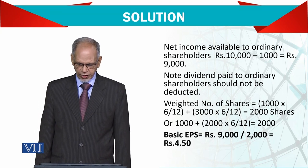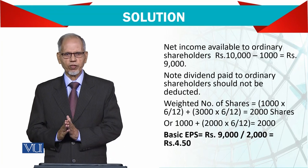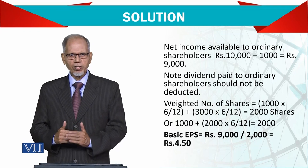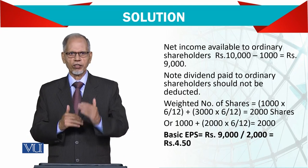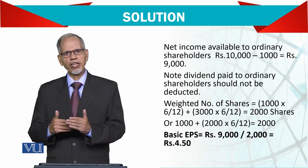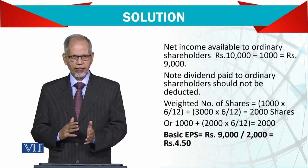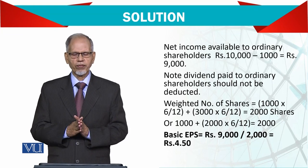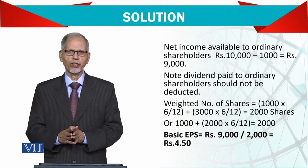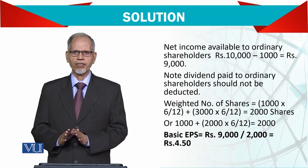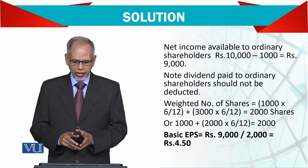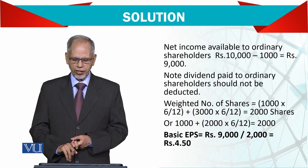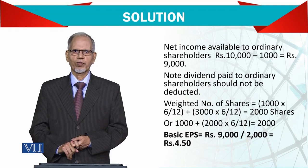For the weighted average number of shares: 1,000 shares remain in the market for 6 months — that is 6 over 12 — and then 3,000 shares remain for another 6 months. So the weighted average comes to 2,000 shares. EPS is 9,000 divided by 2,000 equals 4.50 per share.